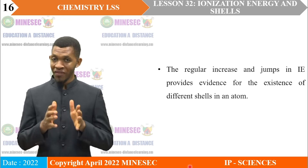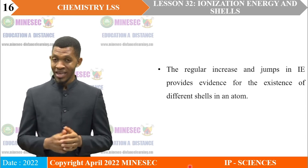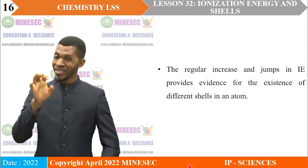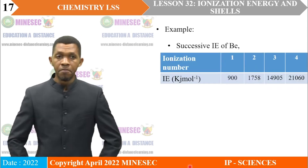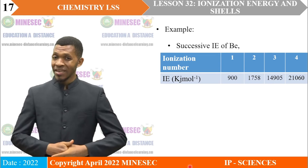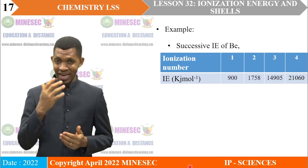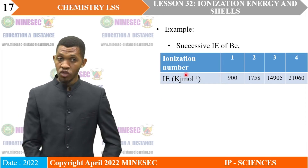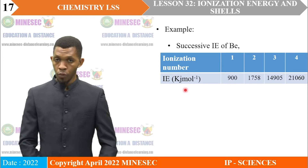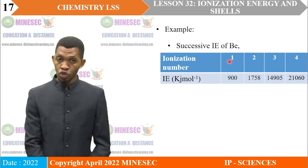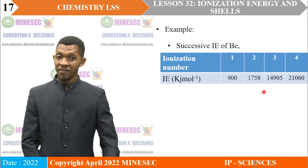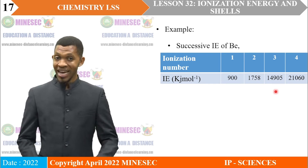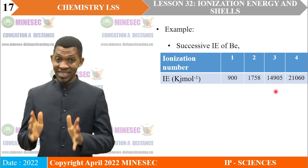For example, the successive ionization energies of beryllium are given in the table on screen. We have ionization number versus ionization energy in kJ/mol. The first ionization energy is 900 kJ/mol, the second is 1,758, the third is 14,905 kJ/mol, and the fourth is 21,060 kJ/mol.